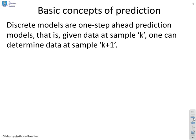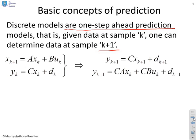A basic concept of how you predict: implicitly, discrete models are one-step ahead prediction models. That is, if you give me the data at sample k, I can use my discrete model to find the data at sample k+1. You'll notice that here, the discrete model in the state is written as x_{k+1} = Ax_k + Bu_k. So given x_k and u_k, I can find k+1.